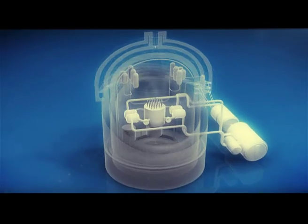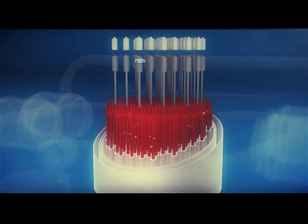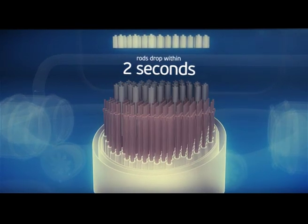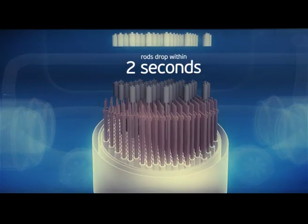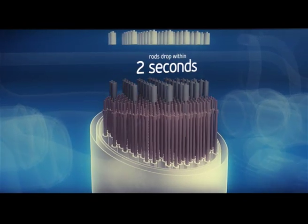In emergencies, to terminate the nuclear reaction, boron carbide scram rods are inserted into the reactor core. The rods are hanging over the core kept by electromagnets and drop by own weight within two seconds. The rods absorb neutrons and the chain reaction terminates.